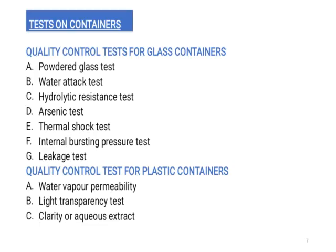Now we will move to the next part: the test for containers. Generally there are three types of containers — glass containers, plastic containers, and metal containers. We have to check different tests for each: the glass container, plastic container, and metal container to assess their quality.